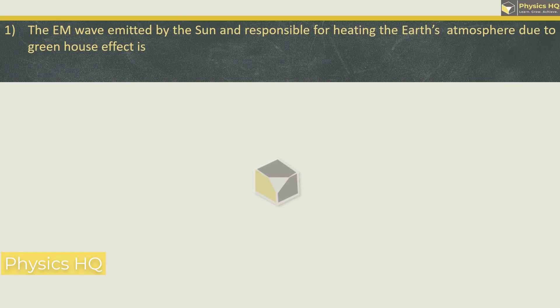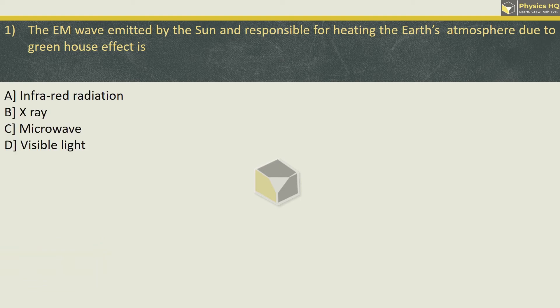The EM wave emitted by the sun and responsible for heating the earth's atmosphere due to greenhouse effect is infrared, x-ray, microwave, or visible light. So remember this: the waves responsible for heat is infrared rays and they account for almost 60% of the sun's radiation. Therefore the correct option is option A.